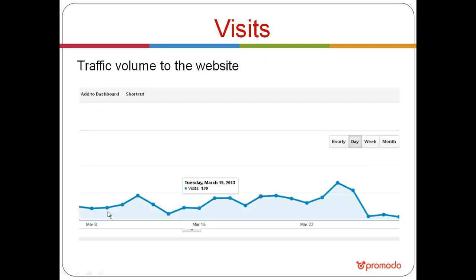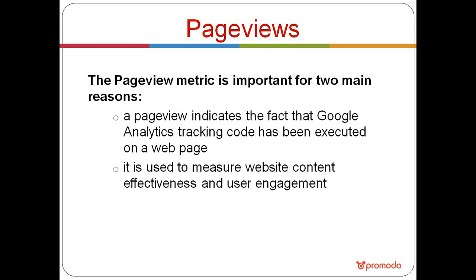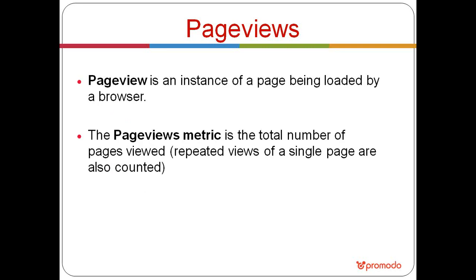Traffic volume is displayed in Google Analytics as a number of daily visits. The next metric is pageviews, defined as an instance of a page being loaded by a browser — also when the Google Analytics tracking code is executed. Pageviews help understand how users engage with your website content and how relevant the content is to their needs. You may also see 'unique pageviews,' which excludes repeated views of the same page within a single visit.